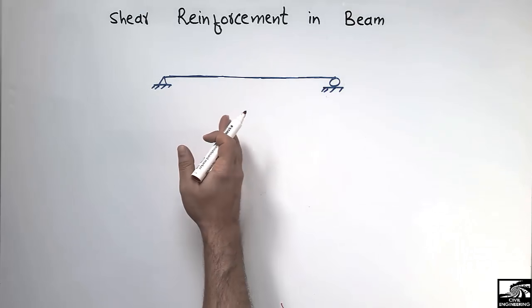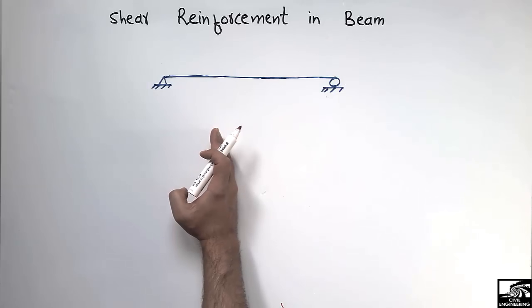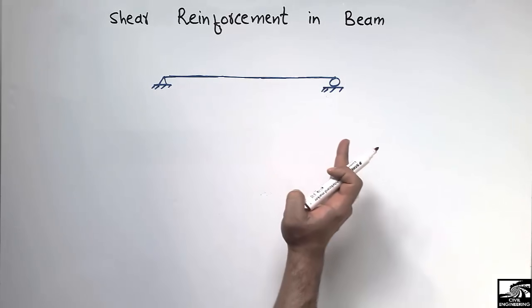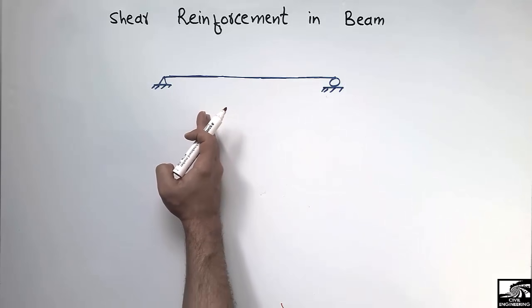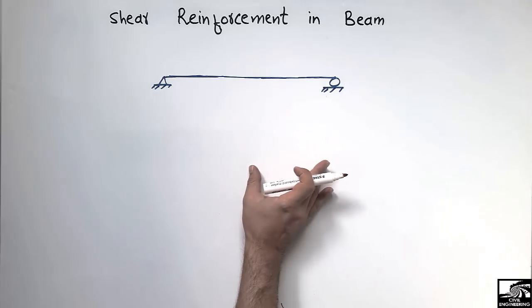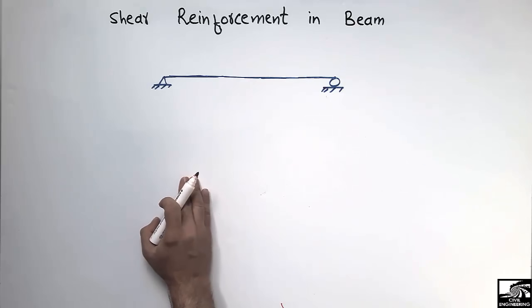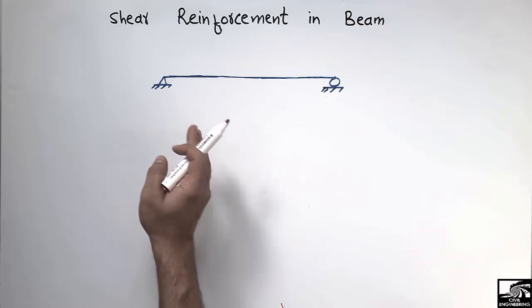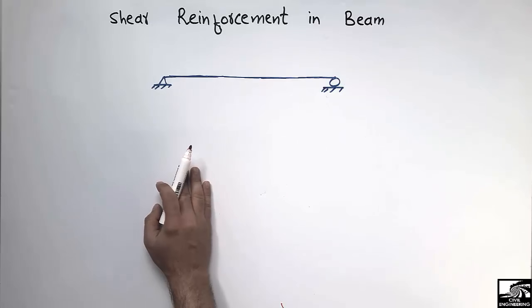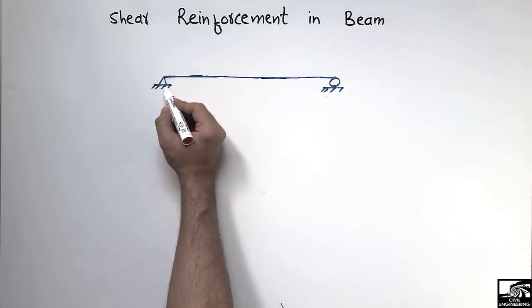Sometimes we see that the spacing of stirrups is different along the whole length of a beam — sometimes they are provided at a smaller distance while at some points they are provided at a higher spacing. We will cover why the shear reinforcement spacing changes along the length of the beam.